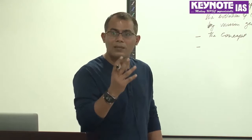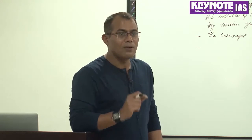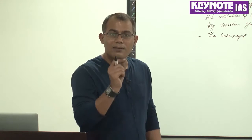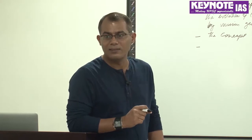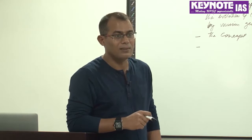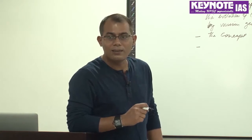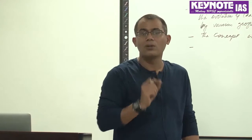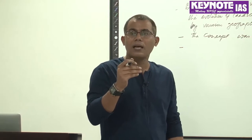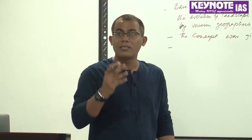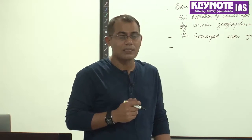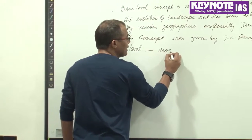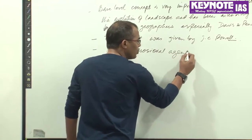You have several examples. For example, the base level of wind is not sea level — it is the water table. There are several base levels which are far below sea level, such as 400 meters below sea level. A very good example is the Jordan River and the Dead Sea. So you cannot confine your introduction to a particular aspect of the concept of base level.